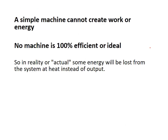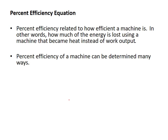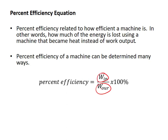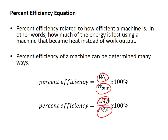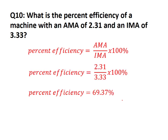A simple machine cannot create work or energy, and no machine is 100% efficient. Percent efficiency tells you how much of the energy you put in you're getting out, with 100% being ideal but impossible. You can calculate it as (work_out / work_in) × 100, or equivalently (AMA / IMA) × 100. Example: a machine with AMA = 2.31 and IMA = 3.33 gives percent efficiency = (2.31 / 3.33) × 100 = 69.37% efficient.